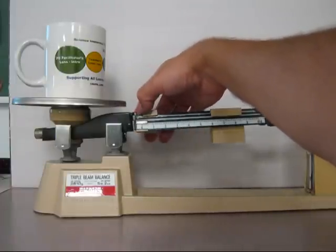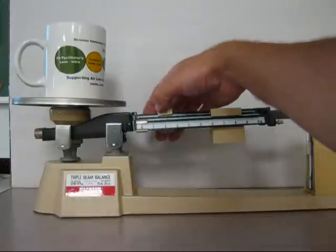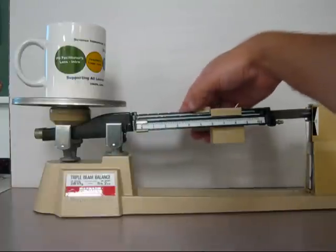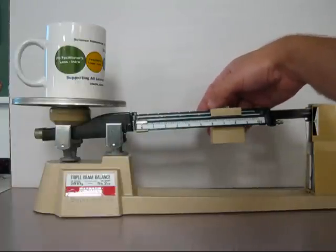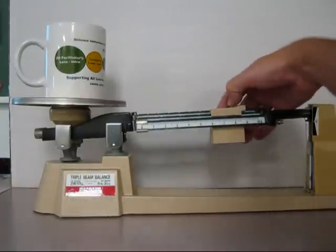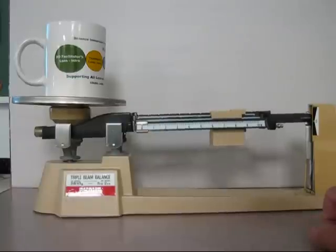So if I start sliding across, ten, twenty, still at the top. Sixty, seventy, up. Click on the eighty, still up there. Ninety, up. And the beam goes down.